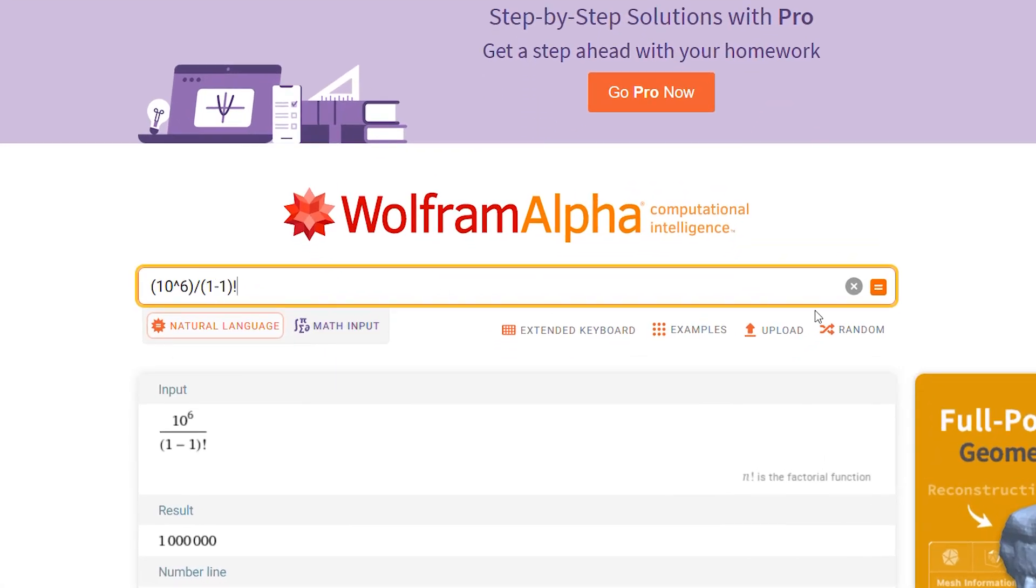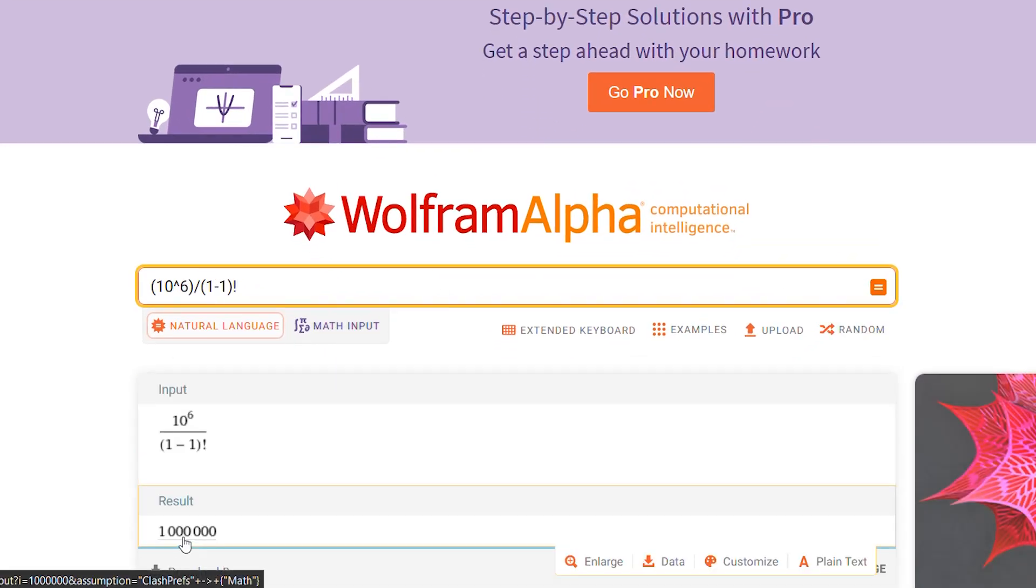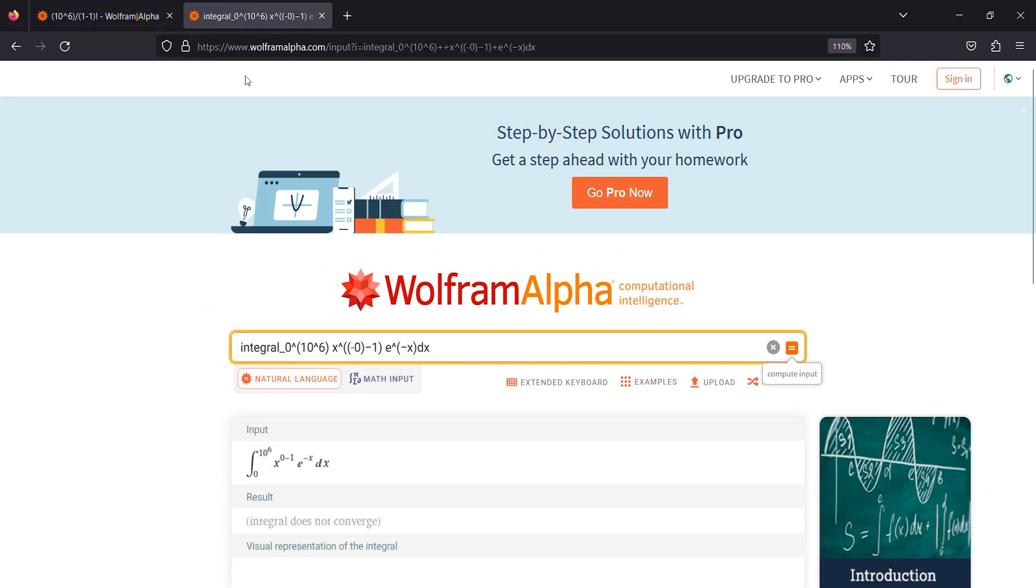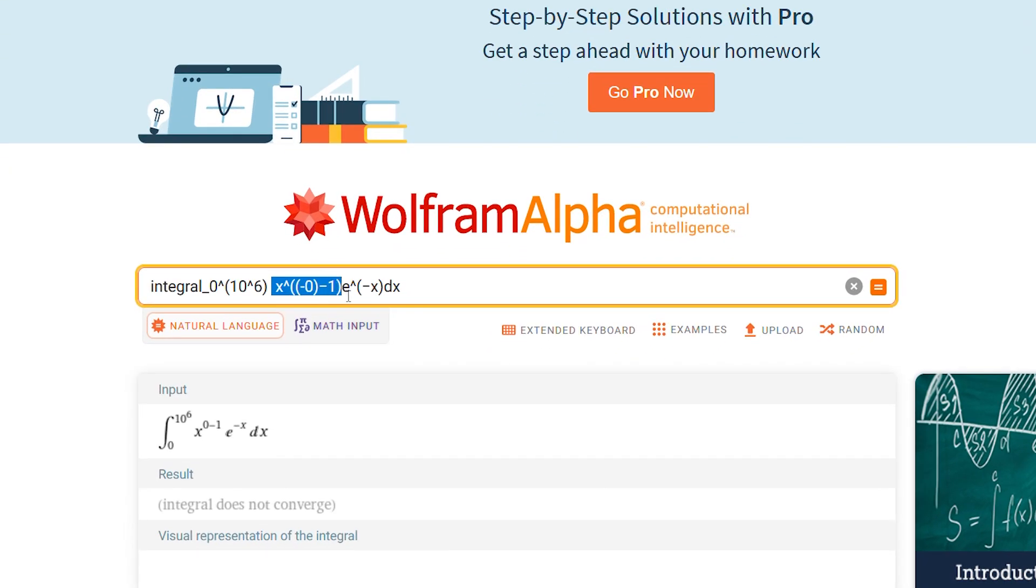So negative 1 factorial is 1 million. In gamma function n equals 0, but the solution does not converge due to the value of n. So we will add small negligible impurity to n value, that is 1 by infinity.